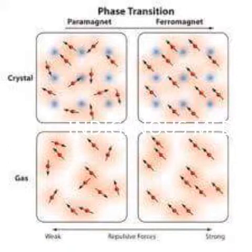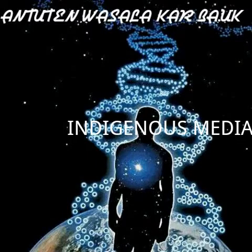Magnetism is composed of individual North Pole magnets and individual South Pole magnets. Magnetism, or magnet, is composed of individual North Pole magnets and individual South Pole magnets.